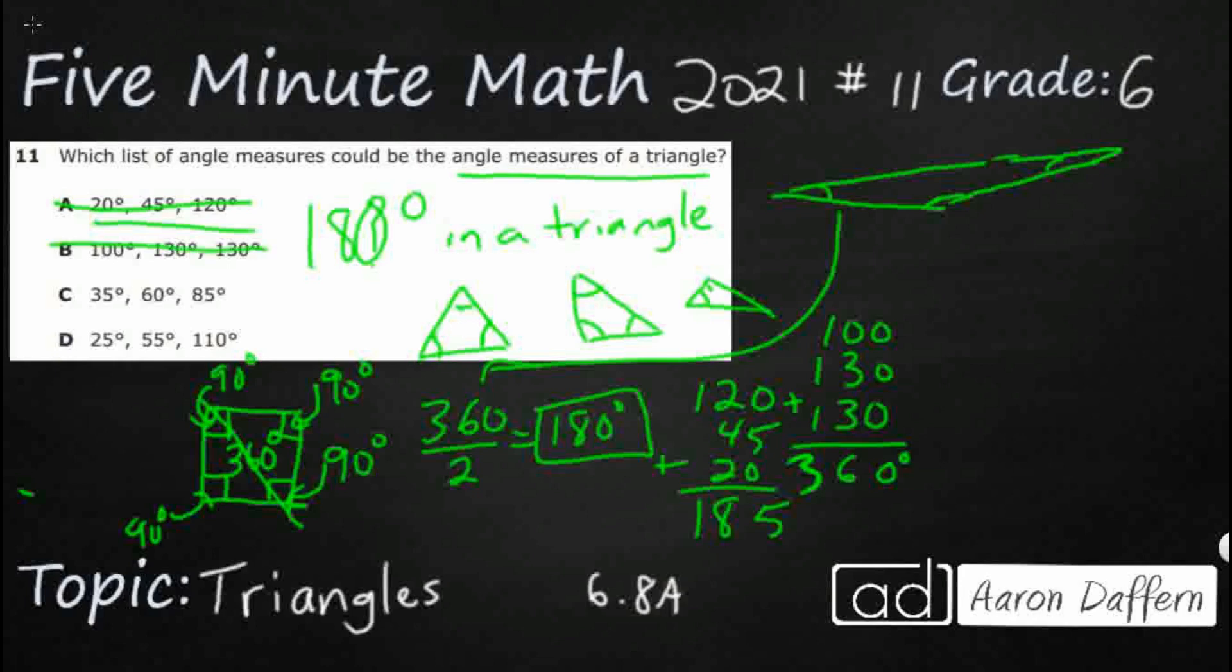Let's hope it's C or D. So C is going to be 35, 60, 85. Let's see. 5 and 10. So that's going to be 4, 10. Aha! 180. So C looks good.